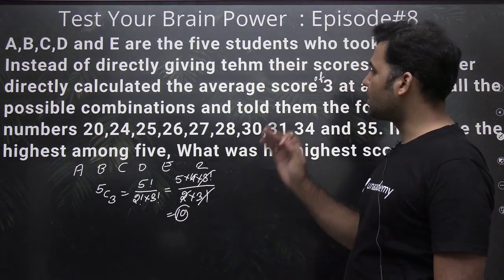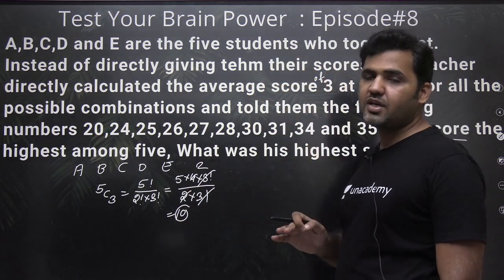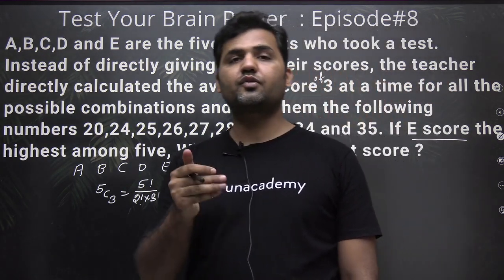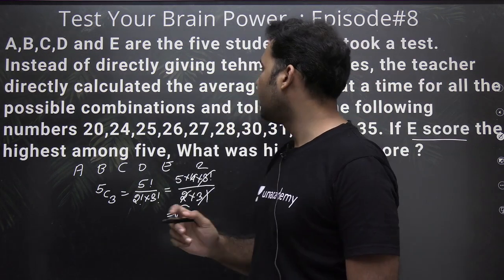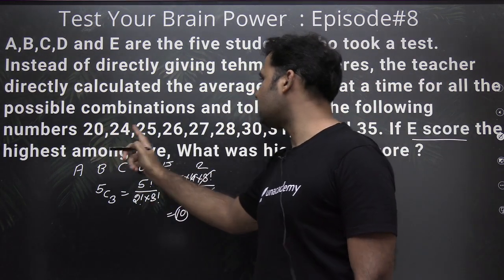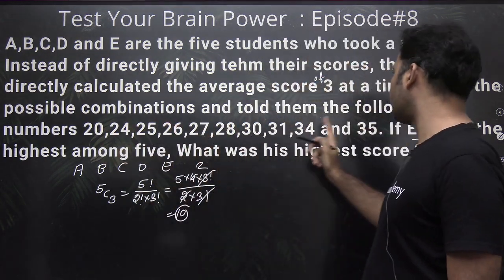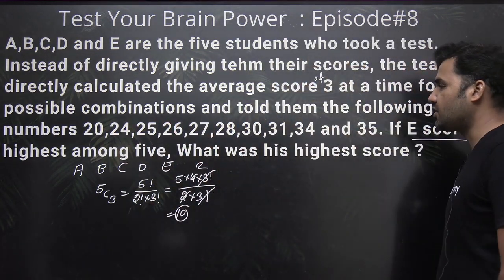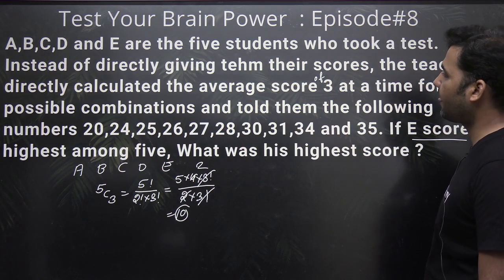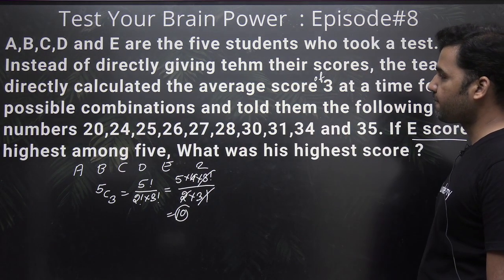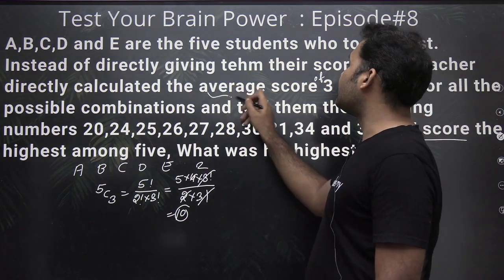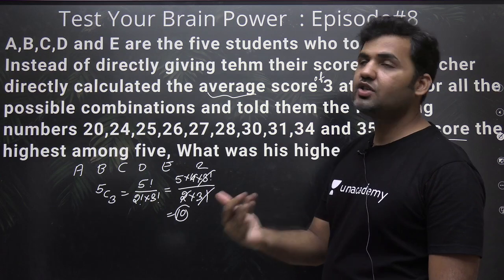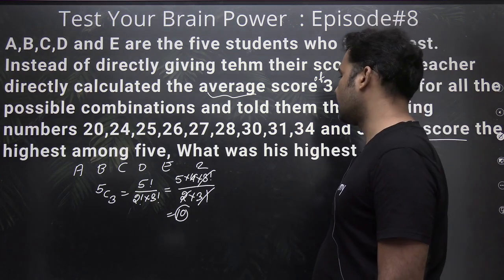That means there will be a total of ten combinations when taking scores three at a time. You can see these are the ten possible scores — and these are averages, not totals. These are the averages of their scores.